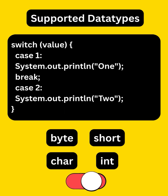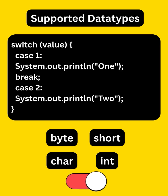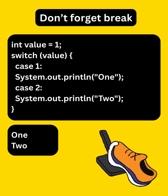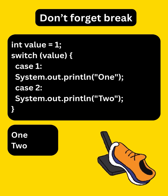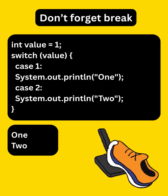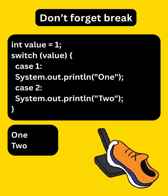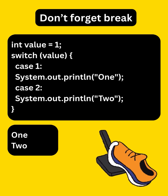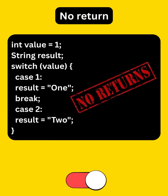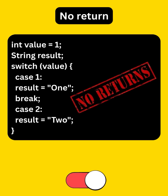Initially, switch supported only primitive types like byte, short, char, and int. Adding a break was crucial — without it, control would fall through to the next case, and you'd keep wondering why your code is not working as expected. Classic switch was statement-based, not expression-based, so it couldn't return values directly.